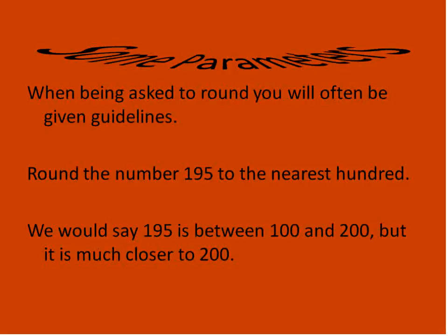So just going to set some parameters for when we are rounding. Usually when you get a question, it'll tell you how much you're going to round it. You'll often see this: Round the number 195 to the nearest hundred. So it's telling you which placeholder. This is the ones, the tens, and the hundreds. So if we're rounding to the nearest hundred, we have to first decide 195 is between what two hundreds? It's between 100 and 200. So because 195 is between 100 and 200, we would try and figure out which one it's closer to. It's much closer to 200. So we would say it is about 200.